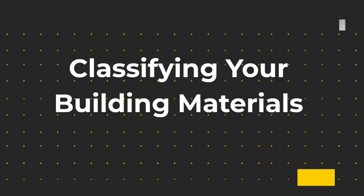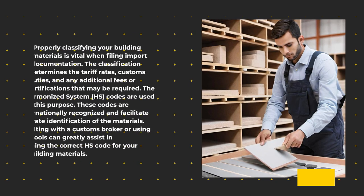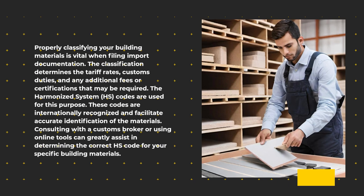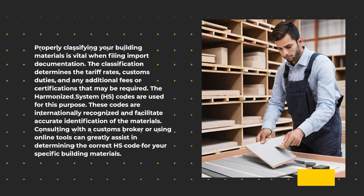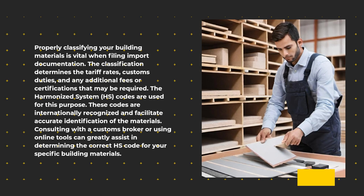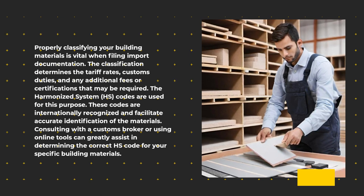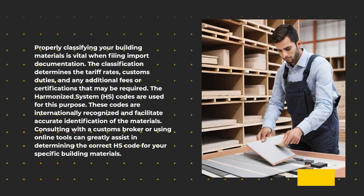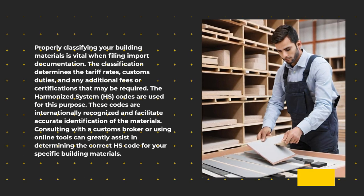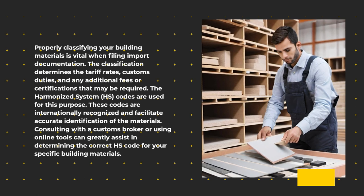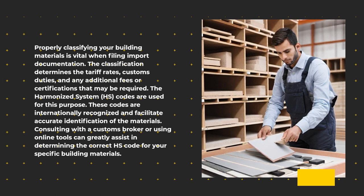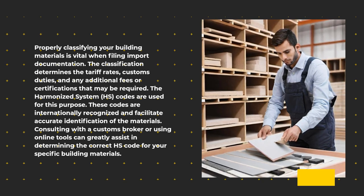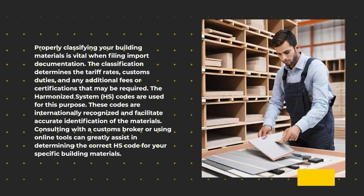Classifying your building materials. Properly classifying your building materials is vital when filing import documentation. The classification determines the tariff rates, customs duties, and any additional fees or certifications that may be required. The Harmonized System codes are used for this purpose. These codes are internationally recognized and facilitate accurate identification of the materials. Consulting with a customs broker or using online tools can greatly assist in determining the correct HS code for your specific building materials.